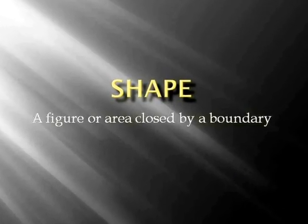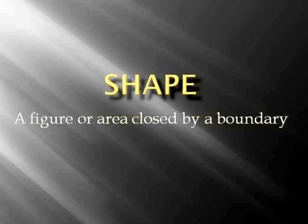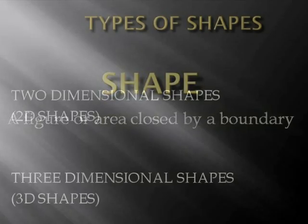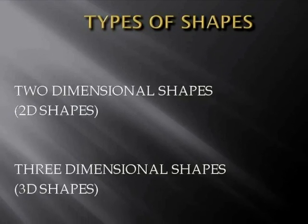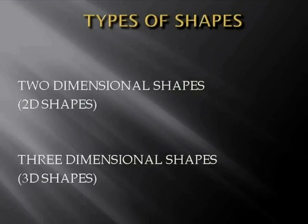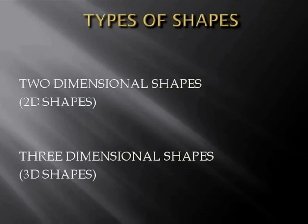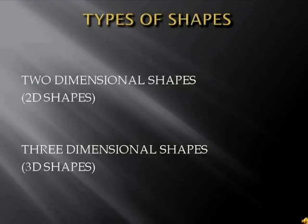A geometrical shape is a figure or area closed by a boundary. There are basically two types of shapes: the first one are the two-dimensional shapes, which are often called 2D shapes, and the second type is the three-dimensional shapes, which are often called 3D shapes.